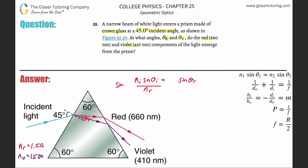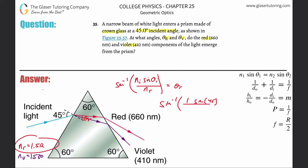Plugging in the numbers: the incident medium is air so n = 1, the incident angle is 45 degrees, and the index of refraction for red light in crown glass is 1.512. So we get inverse sine of sine(45°) divided by 1.512, which gives us approximately 27.88 degrees.